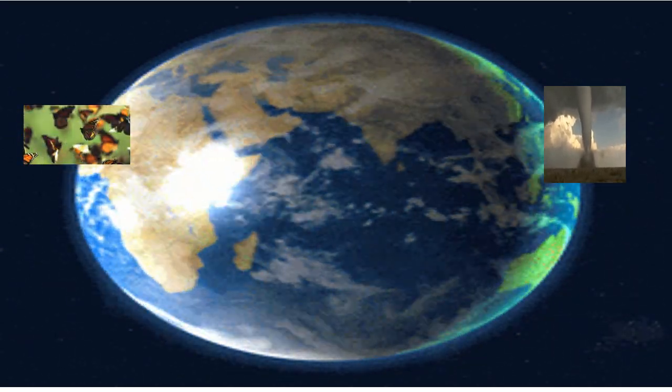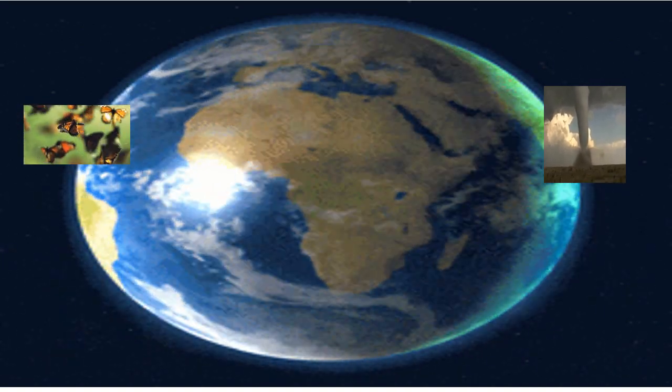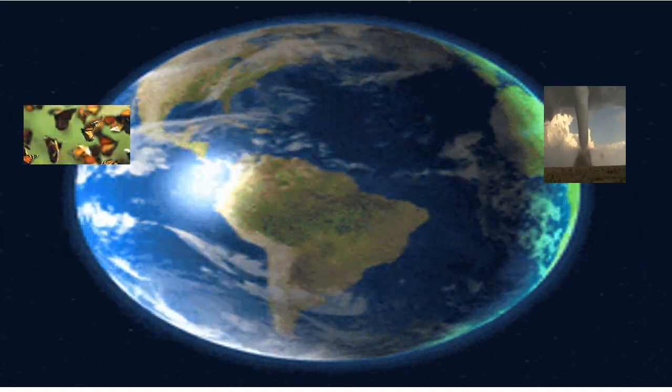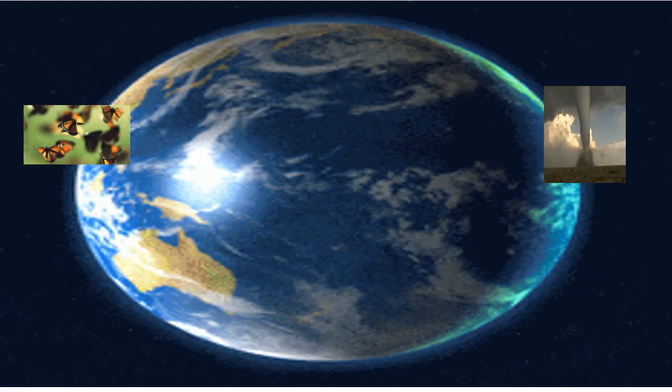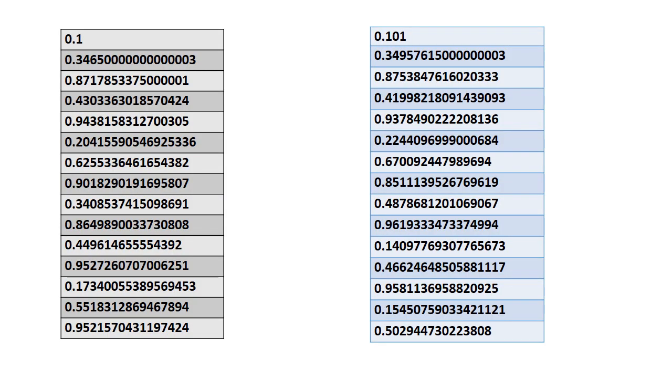So here we see the flapping of wings of the butterfly, and on the other side we see a tornado. In this metaphoric example, what is explained is that the flapping of wings of the butterfly in some part of the world causes a very big tornado in another part of the world. This is an example used to explain the chaotic property - that is, a very minute change in the initial condition will cause a massive difference in the outcome. Let us understand the butterfly effect with a simple example.